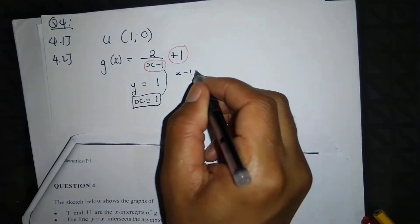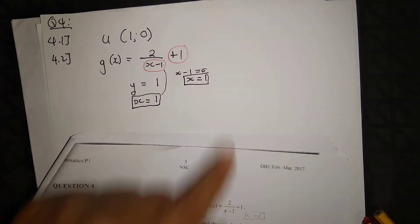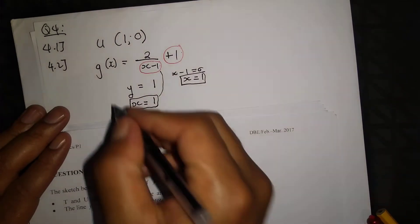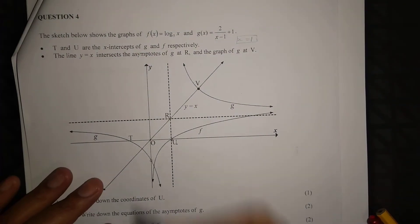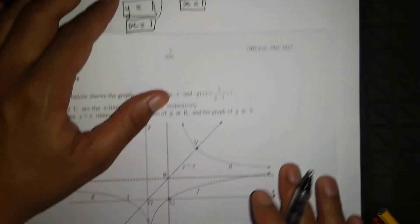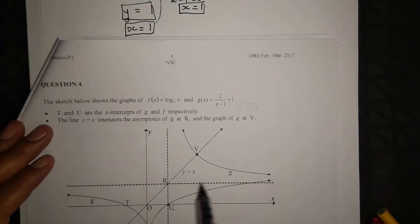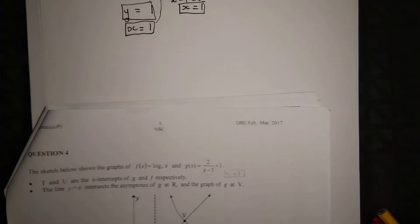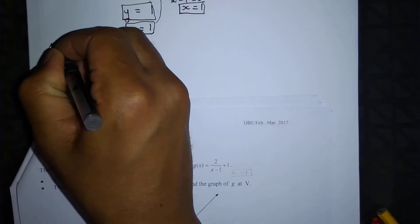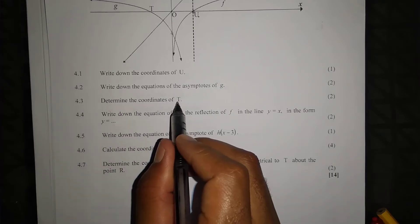The asymptotes are y equal to 1 and x equal to 1. For the vertical asymptote: x minus 1 equal to 0 gives x equal to 1. According to the sketch, the vertical asymptote is x equal to 1 and the horizontal asymptote is y equal to 1.